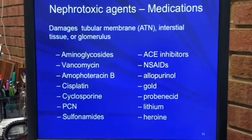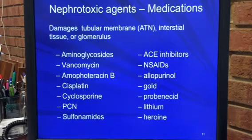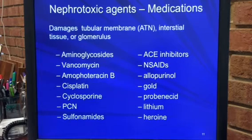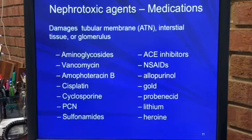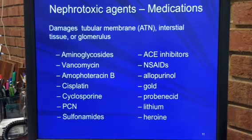ACE inhibitors are actually protective of kidneys for patients who have chronic kidney disease, but there are certain situations where ACE inhibitors can produce acute kidney injury. In the presence of low-volume states, ACE inhibitors can produce a problem that will not allow the kidneys to be properly perfused and damages the kidney structures.